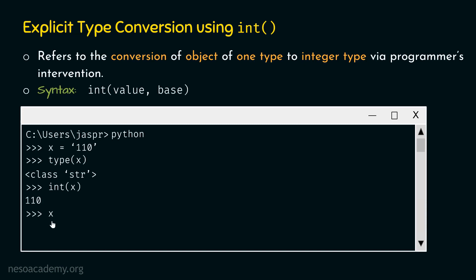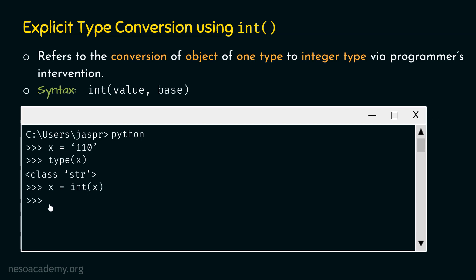However, if we simply type x again, we still get '110' with single quotes, because we did not store the result back. We need to write x = int(x) to store the result within x. Now if we type x, we get 110 as an integer. Checking type(x) confirms class int instead of class str, because x is now holding an integer value.